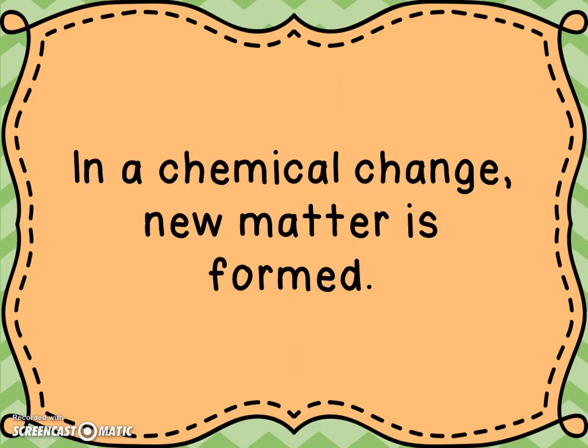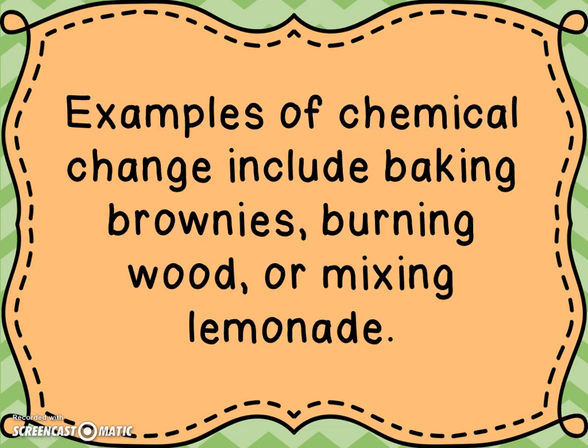Now in a chemical change, some new matter is being formed. Some examples of chemical change include baking brownies, where we take the eggs and the brownie mix and the oil and the water and mix them all together. When we put them in the oven, instead of taking those things back out, we now have brownies. Burning wood — when we put wood in the fireplace or campfire, when it's all said and done, we no longer have wood; instead we have a pile of ashes. Or mixing lemonade, where we take the sugar and the lemonade powder and the freshly squeezed lemons and mix them together — we don't have those things anymore. Instead we have something brand new. We have lemonade.